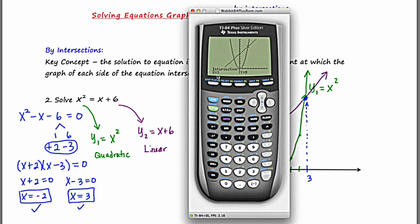And we're getting an intersection point of three, nine. Again, the three being the important part. So x equals three, thus confirming our second answer.